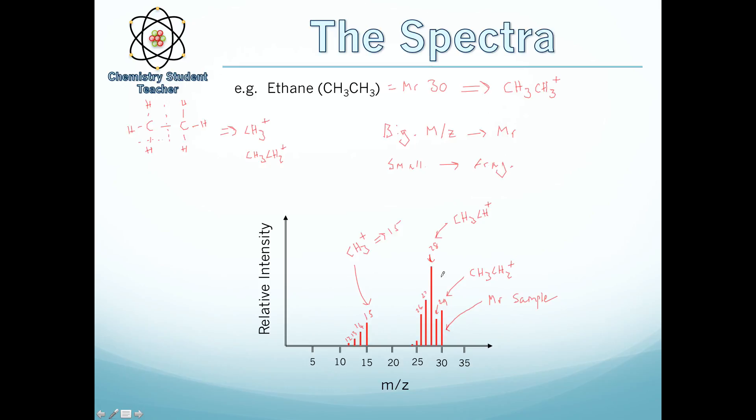So if they represent fragments, we can start to build up an image of what they could be. So for example, if we didn't have a peak at 15, well, that likely indicates that there's not a CH3 group in there. And, well, it couldn't be ethane, because ethane has two CH3 groups. And it builds up a picture.